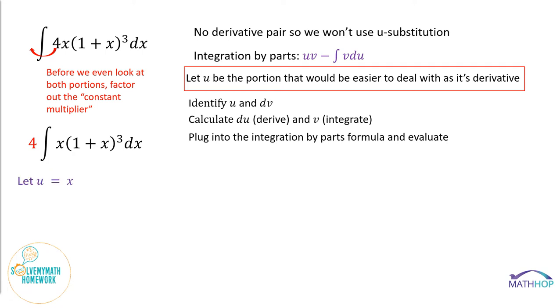We are going to let u be x. If we let u be x, du is 1dx. Therefore, dv is going to be the other portion. dv is going to be 1 plus x to the third. To get to v, remember we integrate because this is the derivative of v. That's what dv stands for. So we're going to integrate to get back to v.